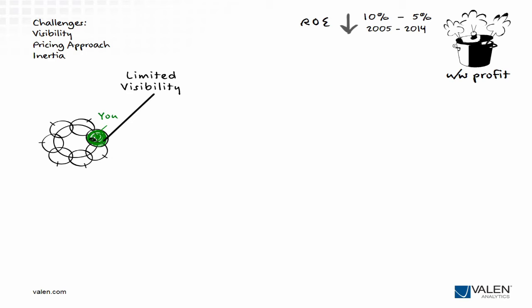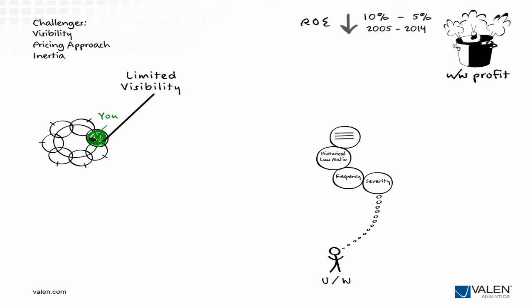What about your underwriters? They're being asked to make more accurate decisions without better data, all while satisfying agent demands for faster response times. As the underwriter, you need to make decisions around how much weight to assign each risk factor. For example, is frequency twice as important as average claim severity, or only 25% more important? Weighing multiple variables at once is a mathematical problem that's best done by computers.